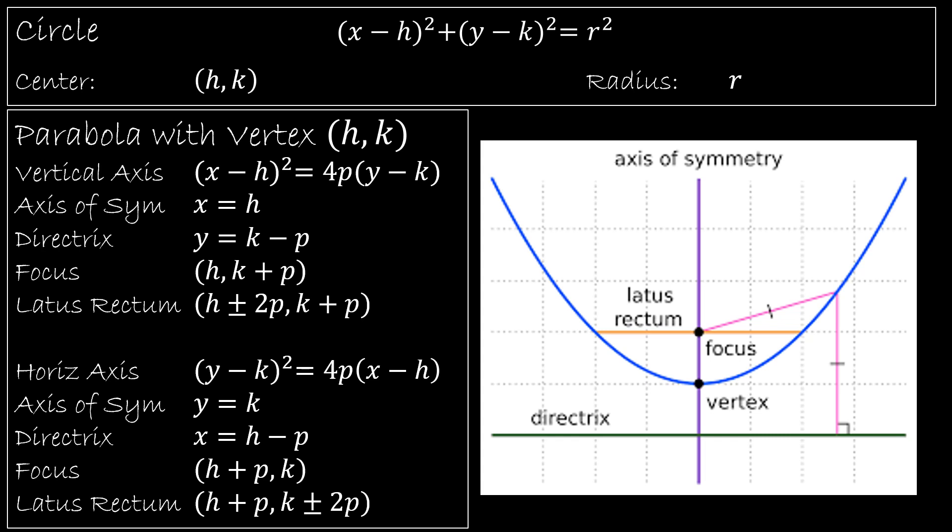For instance, the circle, we're not going to really study the circle. It's the easiest one. (x - h)² + (y - k)² = r², where the center is (h,k) and the radius is r. I didn't even give you a picture of that, because obviously that's easy.